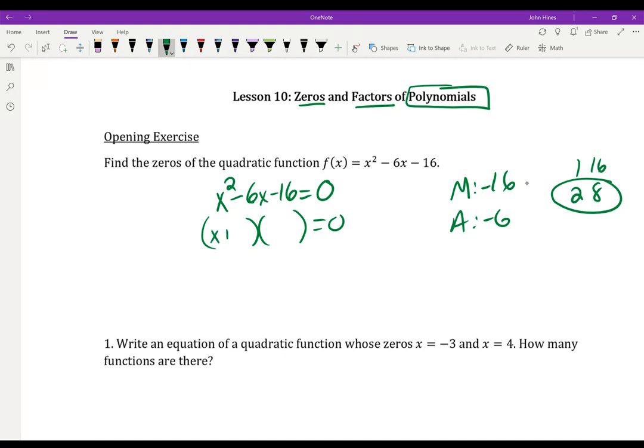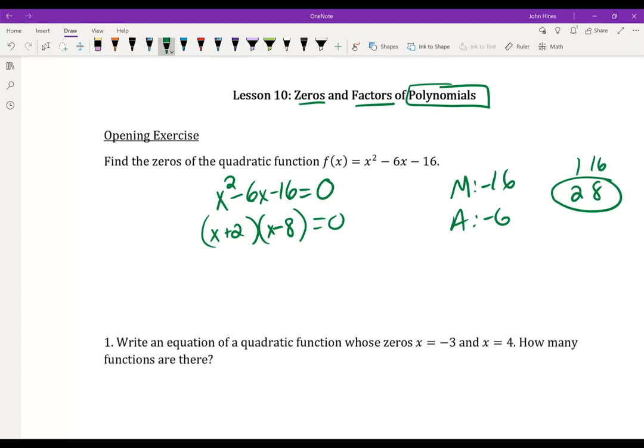x plus 2 and x minus 8. Negative 8, positive 2 gives me negative 6. So you could have made a box there too if you wanted to. But you end up with your 0. So those are my factors. I went from standard form. This is standard form. And we went into factored form here.